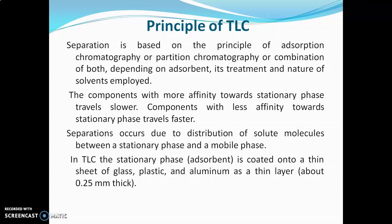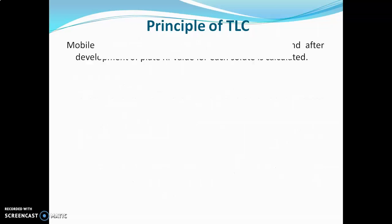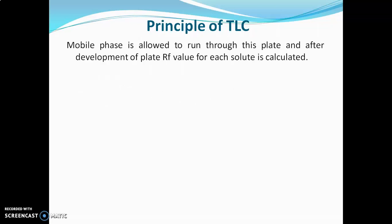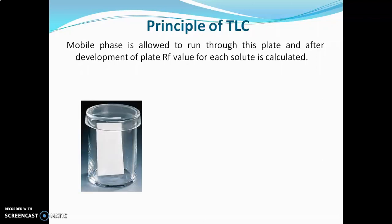The thickness of the layer is generally about 0.25 mm. The sample is spotted on this plate. The mobile phase is allowed to run through the plate, and after development of the plate, the RF value is calculated for each solute. In a chamber, the mobile phase is placed and the plate with the sample is placed in that chamber. Afterwards, the lid is kept on the chamber. The solvent runs through the plate due to capillary action, and after the solvent has traveled a certain distance, the plate is removed, dried and visualized.